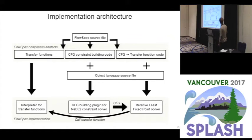I won't go into the details of this, but basically if you have a FlowSpec source file then the implementation takes out the transfer functions, the control flow graph construction code, and the mapping between control flow graph nodes and transfer functions. If you then add a source file from the object language to analyze, then you can build the control flow graph and you can use this iterative least fixed point solver which will call into the interpreter of the transfer functions.